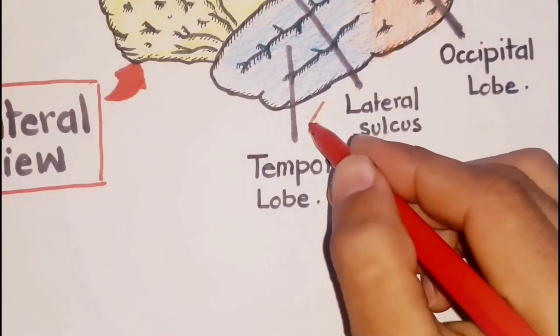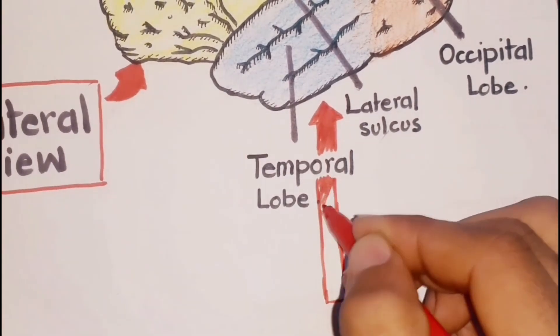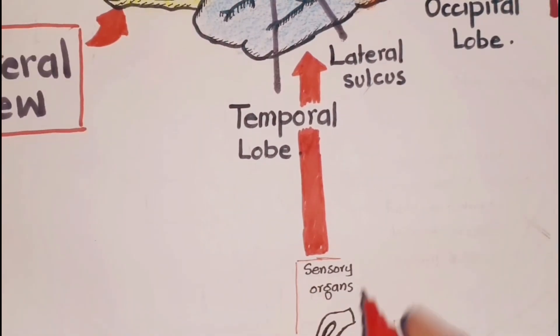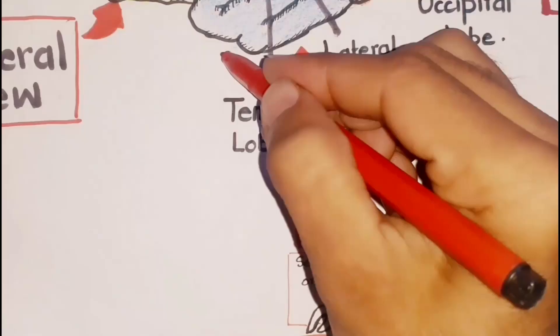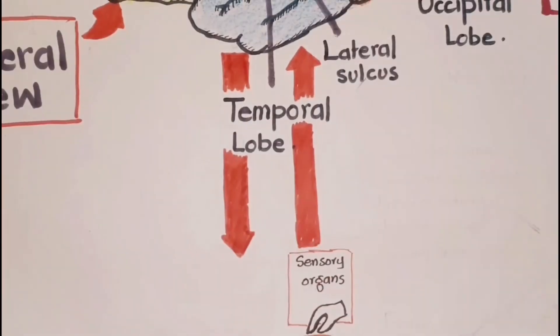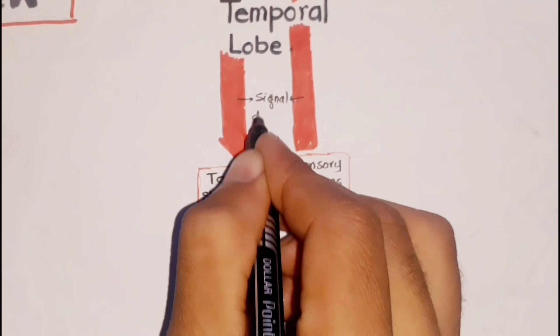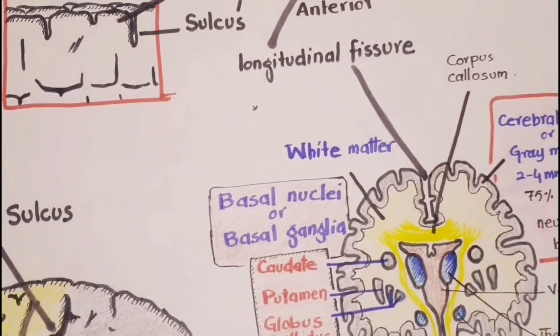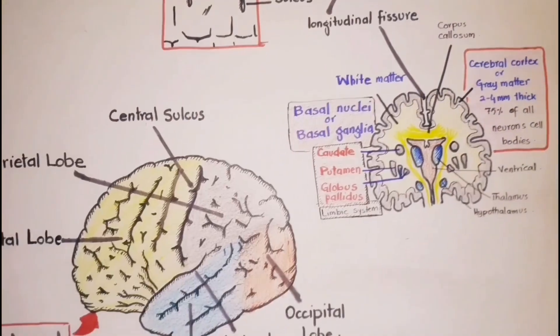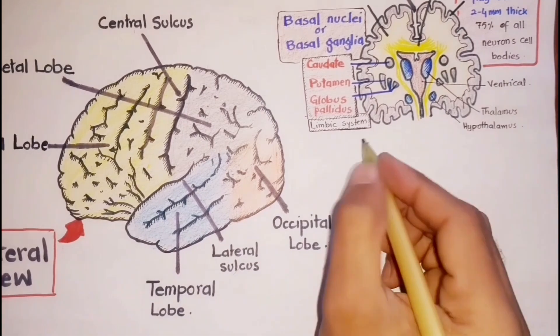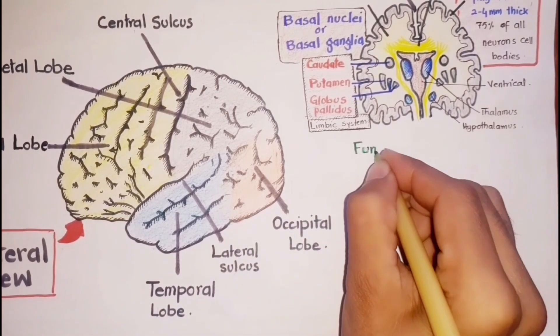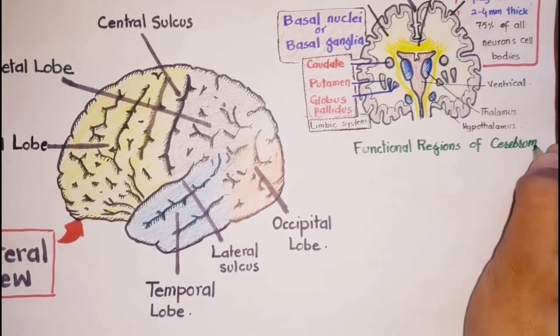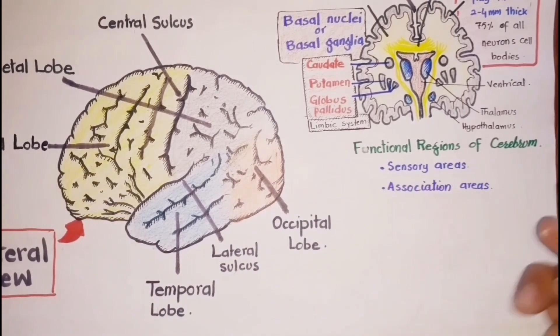The cerebrum provides higher brain functions. It has centers for interpreting sensory impulses arriving from the sense organs and centers for initiating voluntary muscular movements. The cerebrum stores the information that constitutes memory. Thus, the cerebral cortex has many specific functional regions that perform specific functions. The cortex can be divided into sensory, association, and motor areas.